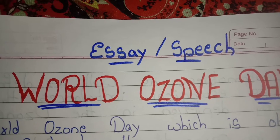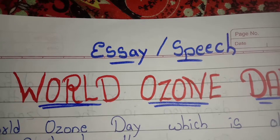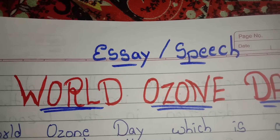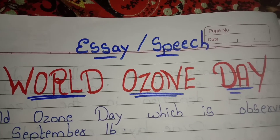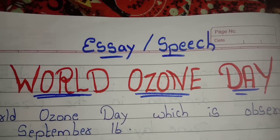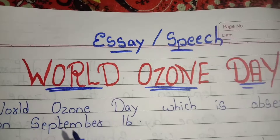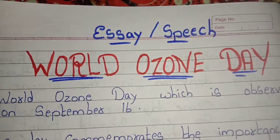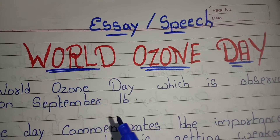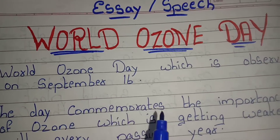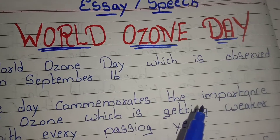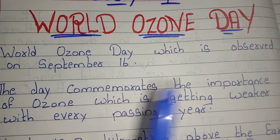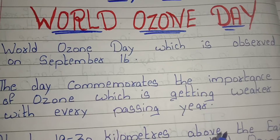Hello friends, welcome back to Triyankush learning channel. In this video we are going to discuss about World Ozone Day. World Ozone Day is observed on September 16. The day commemorates the importance of ozone, which is getting weaker with every passing year.